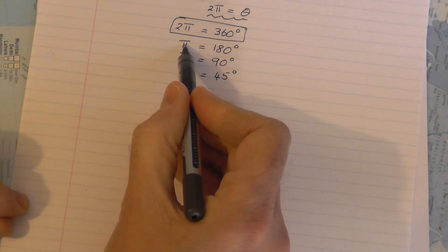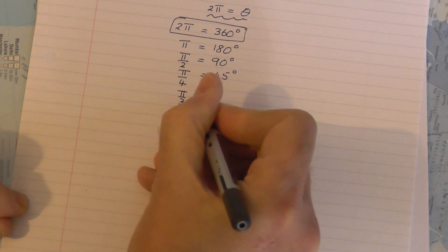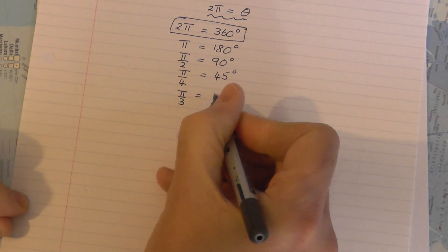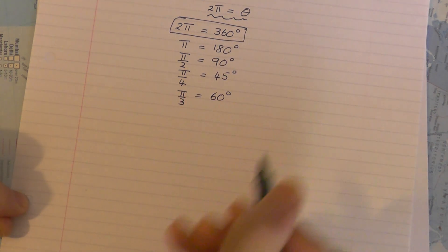If I go back to π, 180 degrees. If I divide that by 3 you get π/3. Divide that by 3, 180 divided by 3 is 60 degrees. You've got to learn that.